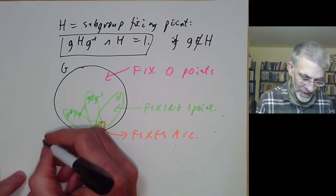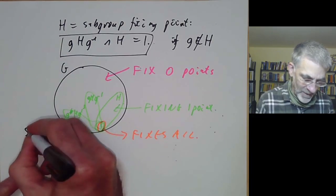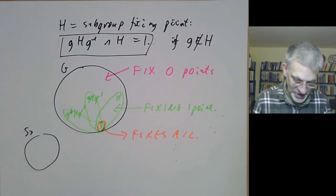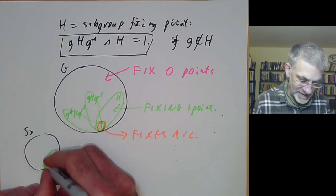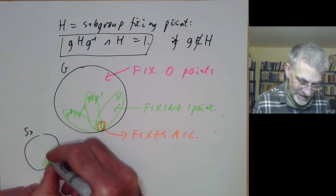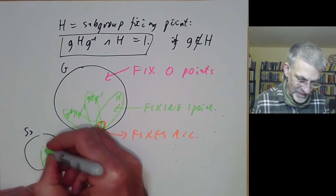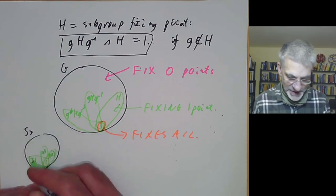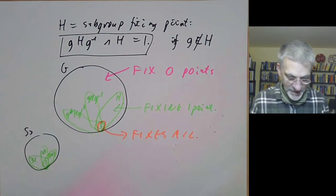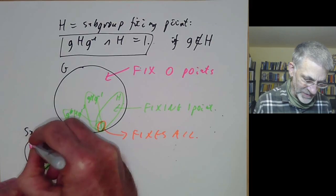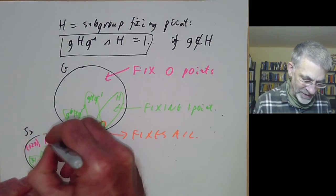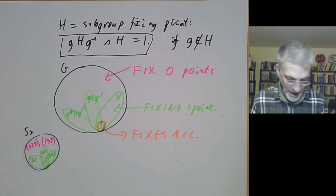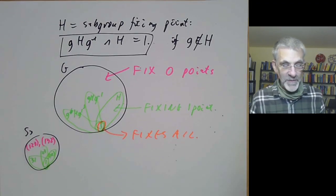For example, if we look at S3 we get exactly this structure. We have a subgroup H consisting of the identity and the element (1 2), and we have three conjugates of H containing the other three transpositions, and then we have two further elements of G — (1 2 3) and (1 3 2) — which fix no points at all.